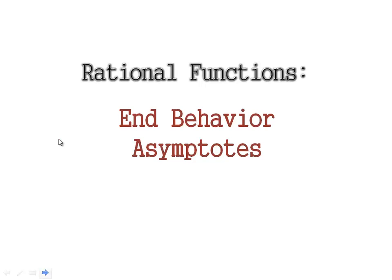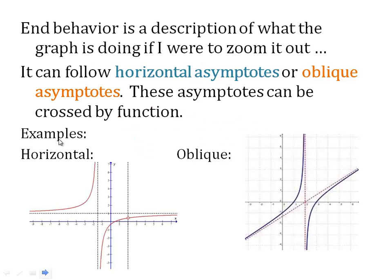This video is about rational functions and specifically how to find end behavior asymptotes. End behavior is a description of what the graph is going to look like if I were to zoom out. Where do the lines lean towards? What do they hug towards? What equations of lines do they get close to?